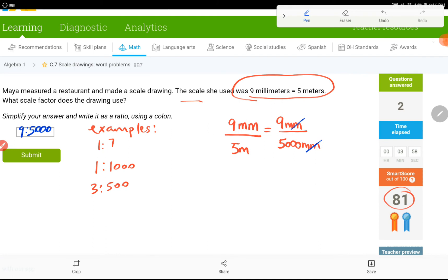So, I would put 9 to 5,000 in my box and then submit my answer. So, that's it for C7. Let's see you guys in the other video for another IXL assignment.